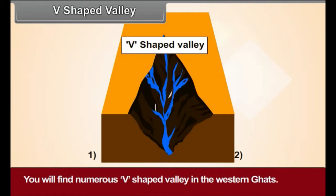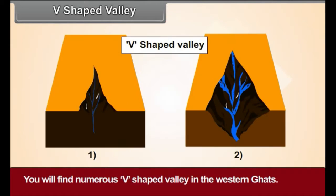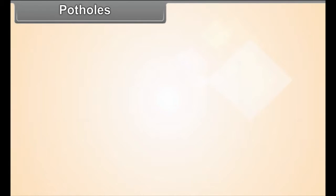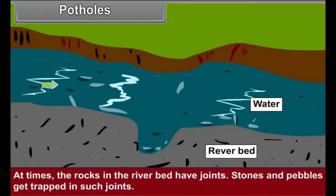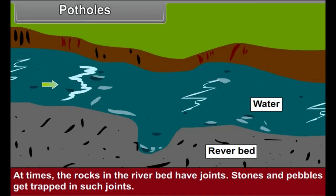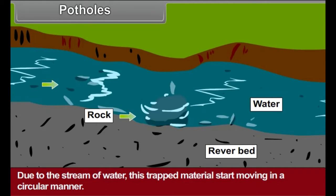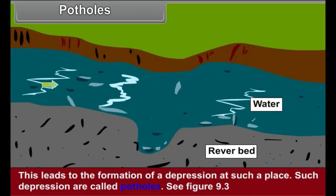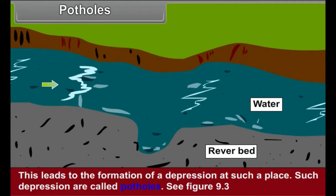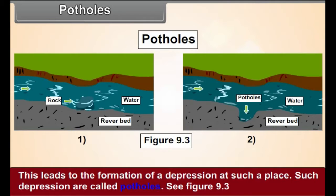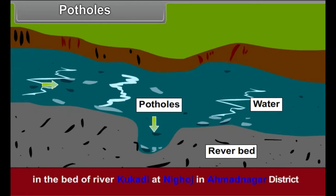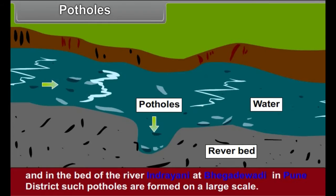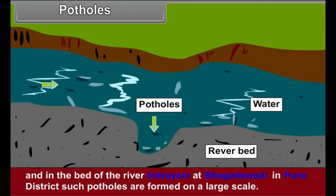See figure 9.2. You will find numerous V-shaped valleys in the Western Ghats. Potholes: At times, the rocks in the river bed have joints. Stones and pebbles get trapped in such joints. Due to the stream of water, this trapped material starts moving in a circular manner. This leads to the formation of a depression at such places. Such depressions are called potholes. In the bed of river Kukdi at Nighoj in Ahmadnagar district and in the bed of river Indrayani at Bhegadewadi in Pune district, such potholes are formed on a large scale.